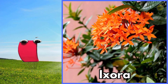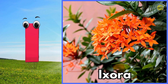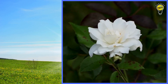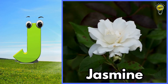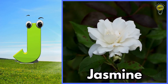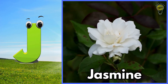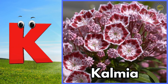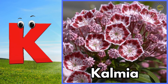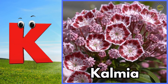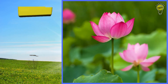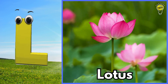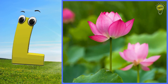I is for ixora flower, ixora flower. J is for jasmine flower, jasmine flower. K is for kalmia flower, kalmia flower. L is for lotus flower, lotus flower.